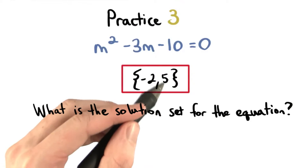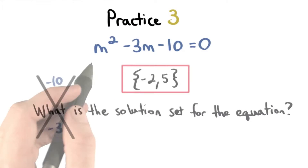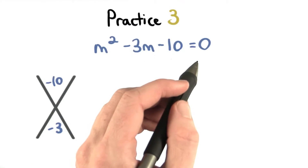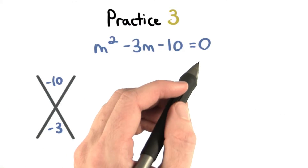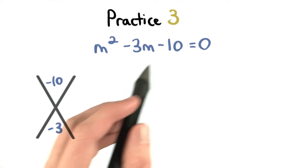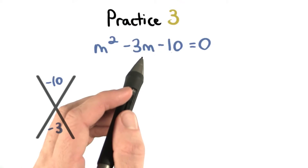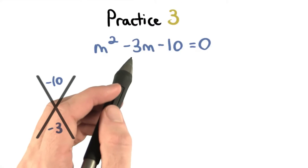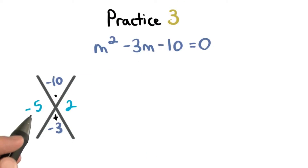Negative 2 and 5 are correct. This equation doesn't need to be rearranged. We just want to find factors of negative 10 that sum to negative 3. Negative 5 and 2 are the factor pair we need.